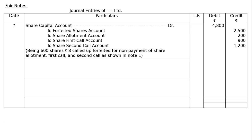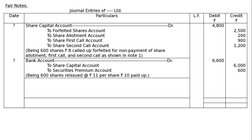Next, reissue of forfeited shares at a premium, fully paid. Bank account debited — 600 shares sold at Rs.11 per share = Rs.6,600. To share capital account: 600 × Rs.10 = Rs.6,000. To securities premium reserve account Rs.600. Being 600 shares reissued at Rs.11 per share, Rs.10 paid up.